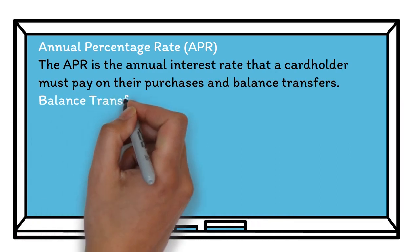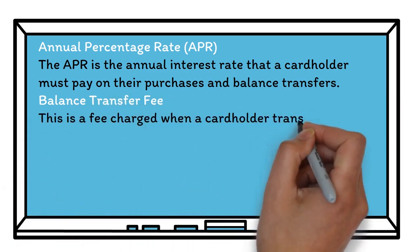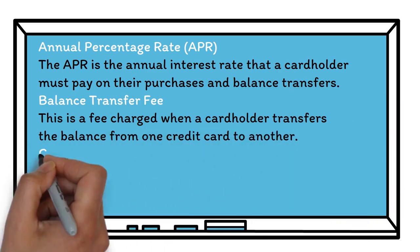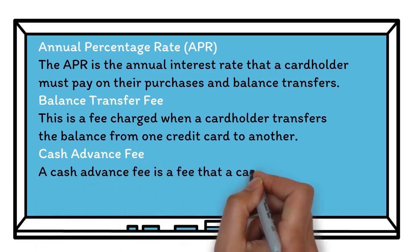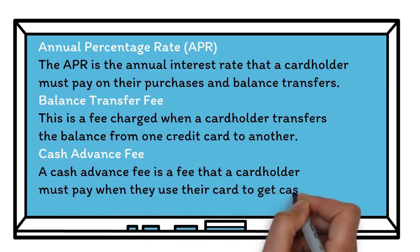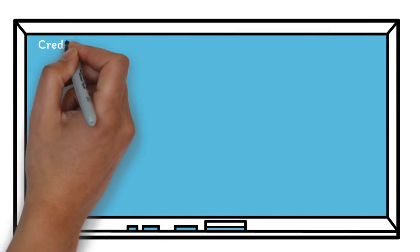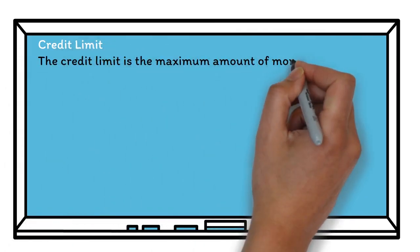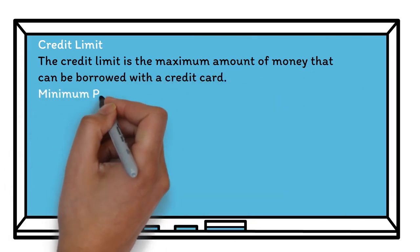Balance transfer fee. This is a fee charged when a card holder transfers the balance from one credit card to another. Cash advance fee. A cash advance fee is a fee that the card holder must pay when they use their card to get cash from a source other than an ATM. Credit Limit. The credit limit is the maximum amount of money that can be borrowed with a credit card.